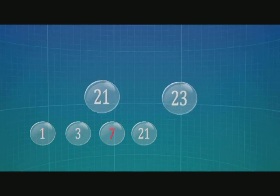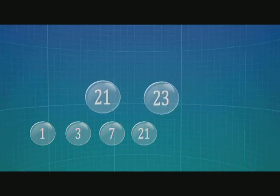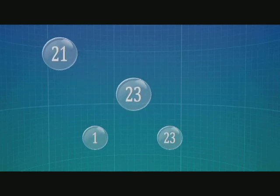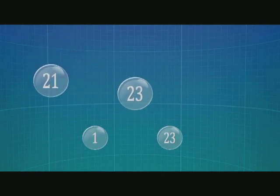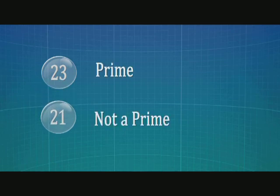But before we set off, let's quickly look at what a prime number is. Take the number 21. We can divide it by 1, 3, 7 and 21 without leaving a remainder. Now take 23. We can divide it only by 1 and 23. 23 is a prime. 21 is not.